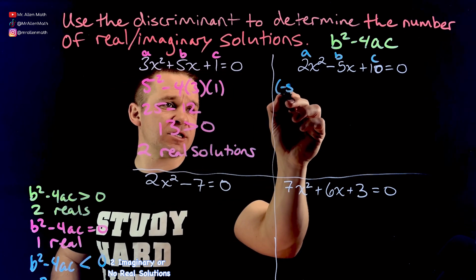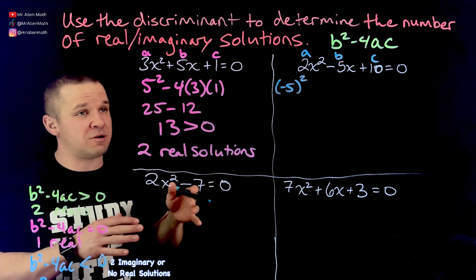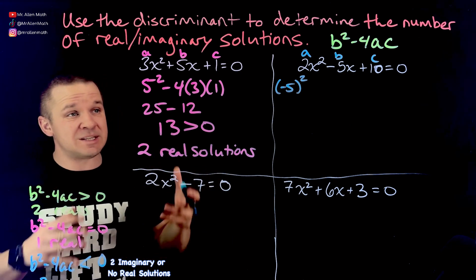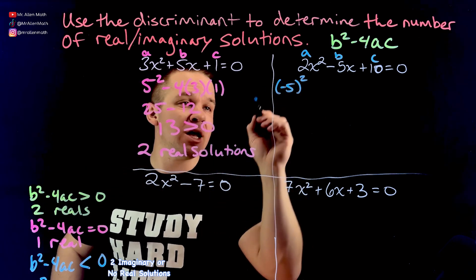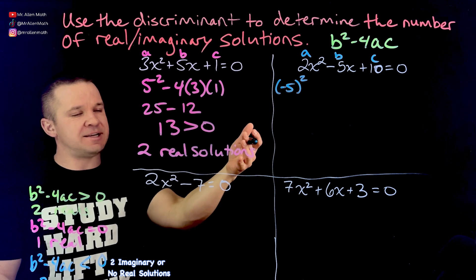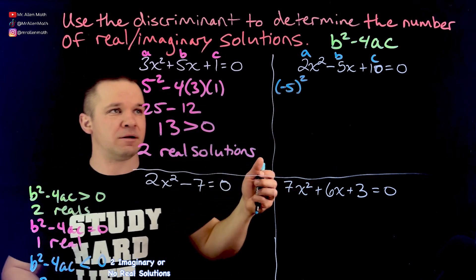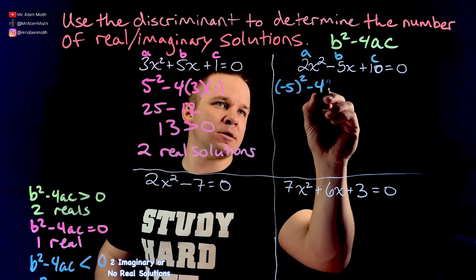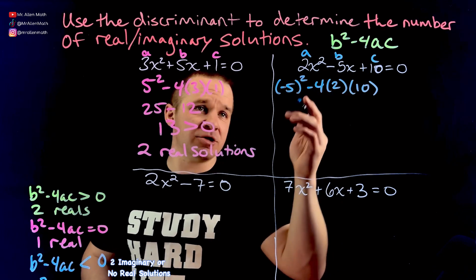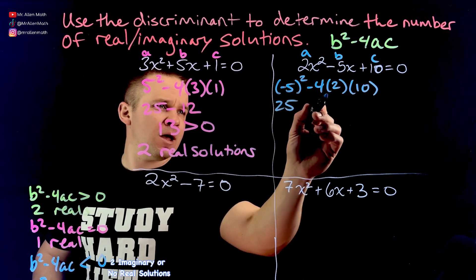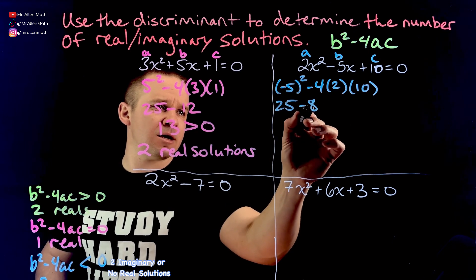So we've got negative 5 squared. That's going to be positive 25. Make sure you put that in parentheses there, especially if you're plugging it in your calculator. If you don't use parentheses exactly how I have it, you're going to get the wrong answer. Don't put the exponent 2 in there with the 5 and have the parentheses after. It's going to screw it up. It has to be exactly how I have it here in your calculator if you're typing it in. And then we have minus 4 times A, which is 2 times C, which is 10. And I'll just evaluate this. So I've got 25. We have 4 times 2 is 8 times 10 is 80. So minus 80.